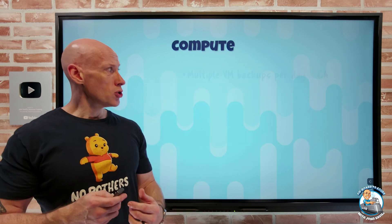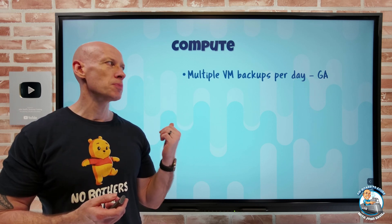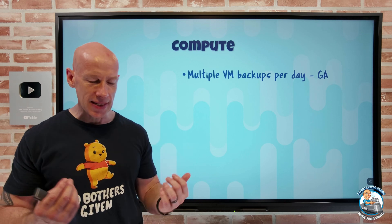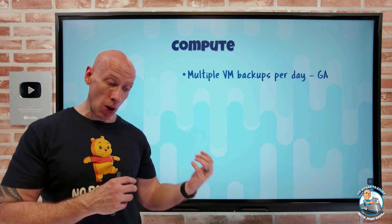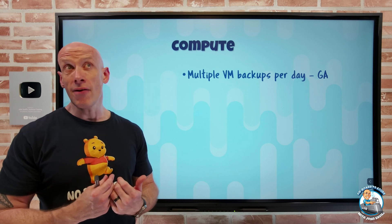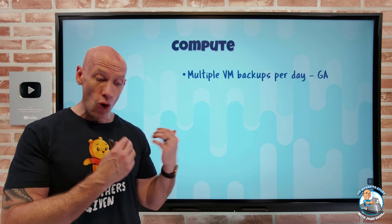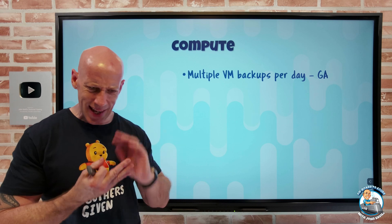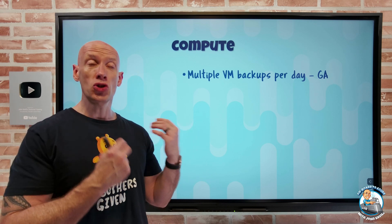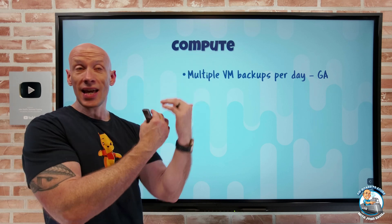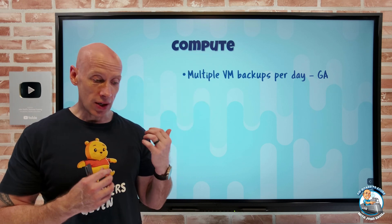On to what's new. On the compute side, we now have multiple virtual machine backups per day in general availability. This does require the use of the enhanced policies for virtual machines, but now I can configure snapshots all the way down to every four hours — so four, six, eight, 12, and 24 hours for my virtual machines within a certain set of hours. I maybe only want to do it during the working day.